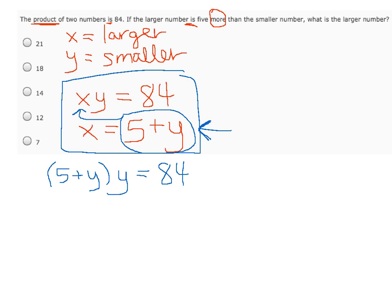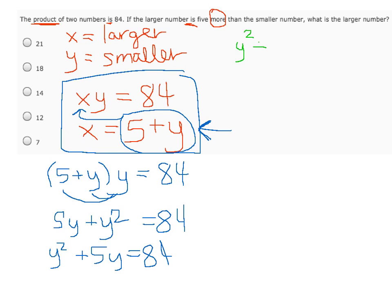To continue to solve this, we need to distribute this y to both terms within the parentheses, so we're left with 5y plus y squared equals 84. Remember that we want to write this with the highest power first, so y squared plus 5y equals 84. Now we also want this equation to be set equal to zero. Let's rewrite this equation as y squared plus 5y minus 84, because in order to get the 84 onto the left side of the equation, we subtracted 84 from each side, so it's now equal to zero.